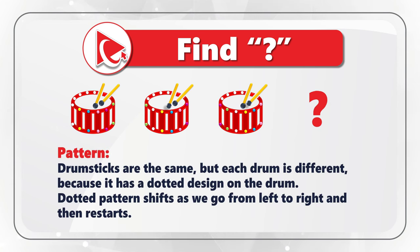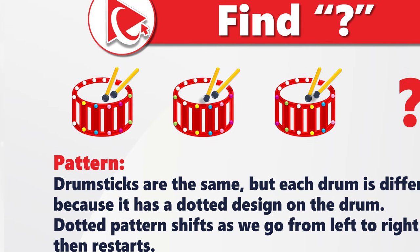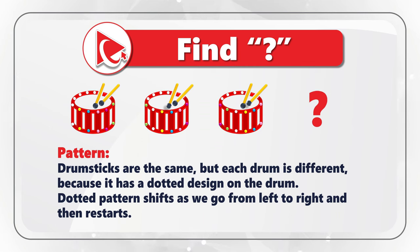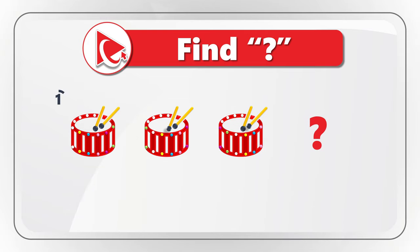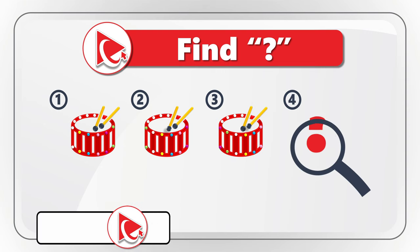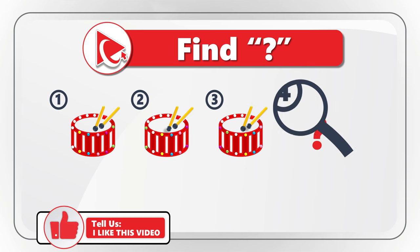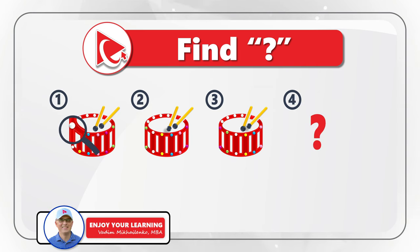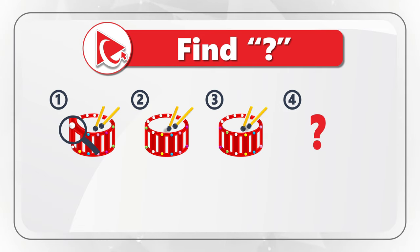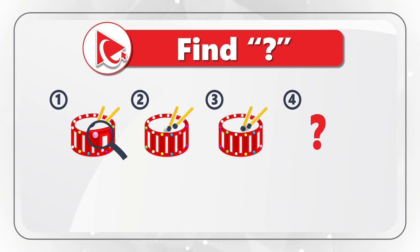To solve this challenge, we need to understand the pattern. Even though drums and drumsticks look similar, if you look closely, you will see that only drumsticks are the same — but drums are different because they have dotted designs. Let me assign a unique number to each drum: one, two, three, and the missing drum is four. On drum one, the dotted pattern starts with white dots at the top. As it continues, you see different colors: white, yellow, blue, pink, purple, and green.